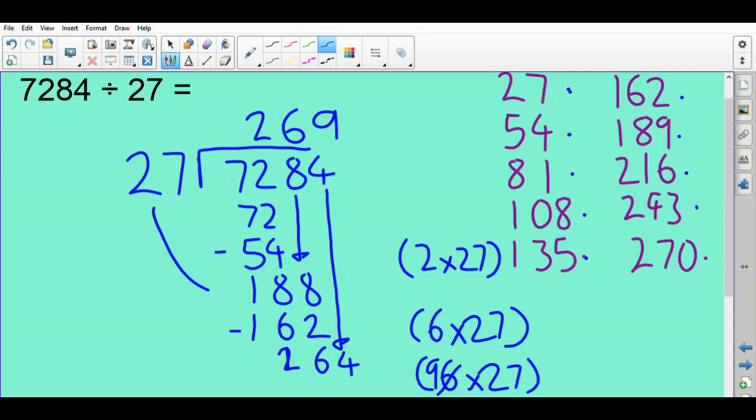And now I'm left with, I'm taking away 264, that's 243 there, which leaves me with 21. So 269 remainder 21. So you can see we're dealing with quite large numbers there. We'll go through another example, but you can see it's quite a complicated method, lots to remember.